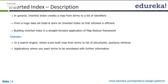The good thing is that an inverted index is a very straightforward application of the MapReduce framework. This derives from the fact that what you're basically trying to do in an inverted index is group things based on certain keys, and this grouping function is very central to the MapReduce framework.